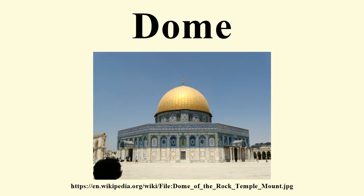Internal Forces. A masonry dome produces thrusts down and outward. They are thought of in terms of two kinds of forces at right angles from one another. Meridional forces are compressive only and increase towards the base, while hoop forces are in compression at the top and tension at the base, with the transition in a hemispherical dome occurring at an angle of 51.8 degrees from the top. The thrusts generated by a dome are directly proportional to the weight of its materials.